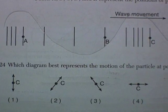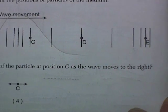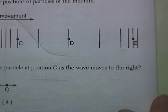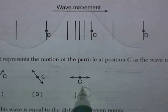Which diagram best represents the motion of the particles at position C as the wave moves to the right? Well, it's not up and down, it's back and forth, so that's going to be choice 4.